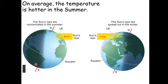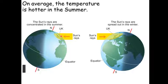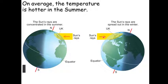Here's a slightly different diagram showing the same thing. On the left-hand side is the Northern Hemisphere in summer and on the right-hand side, the Northern Hemisphere in winter. In summer, the sun's rays are more concentrated over the UK where we are. Compare that to winter when the Northern Hemisphere is tilted away from the sun — the same amount of sun's rays are more spread out. So it will feel much cooler in the winter compared to summer.